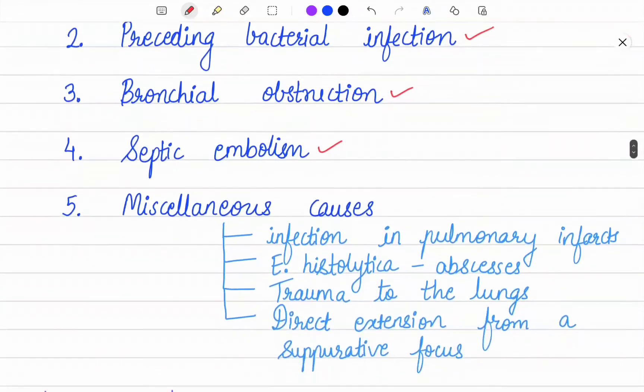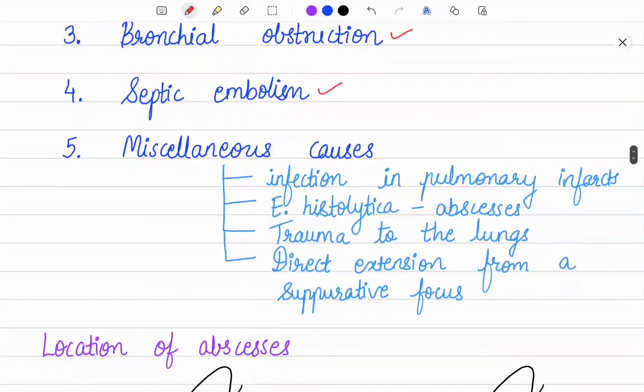Lastly, there are miscellaneous causes including infection in pulmonary infarcts, amoebic abscesses due to infection with Entamoeba histolytica, trauma to the lungs, or direct extension from a suppurative focus in the mediastinum, esophagus, subphrenic area, or spine.